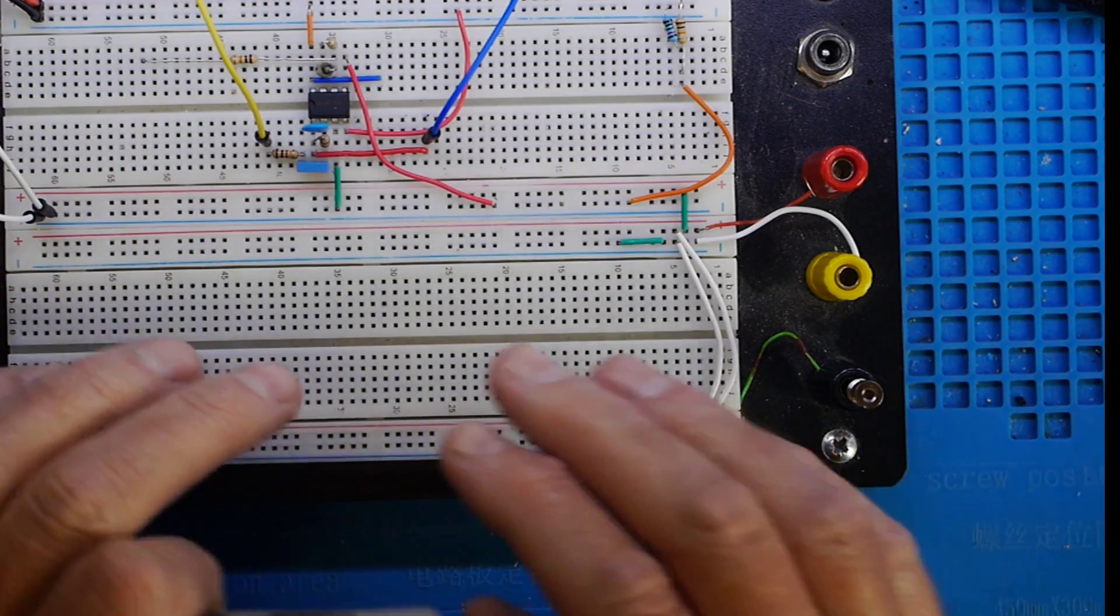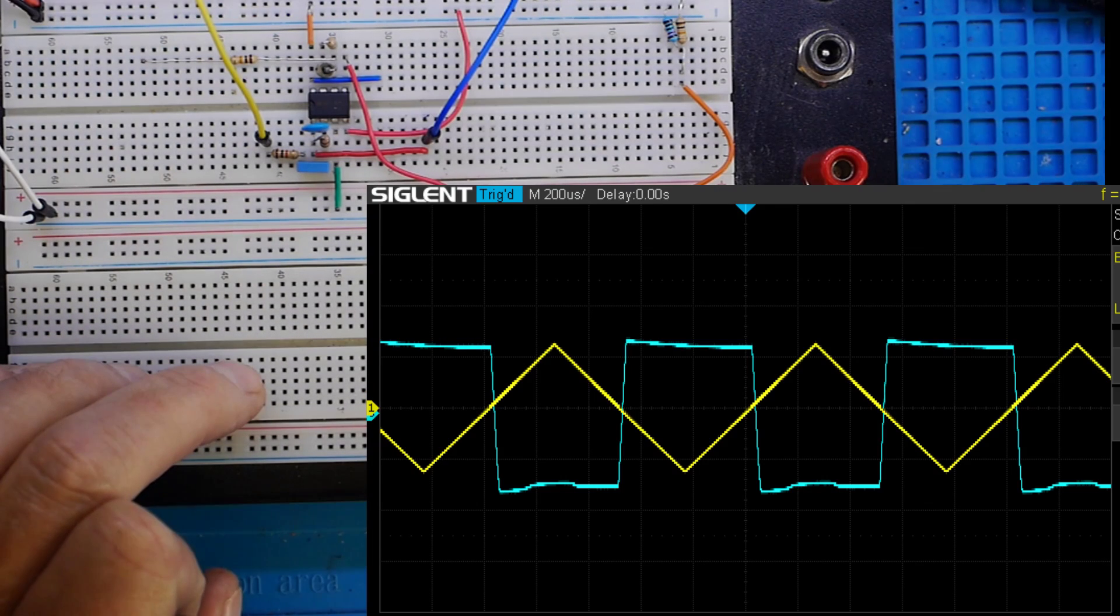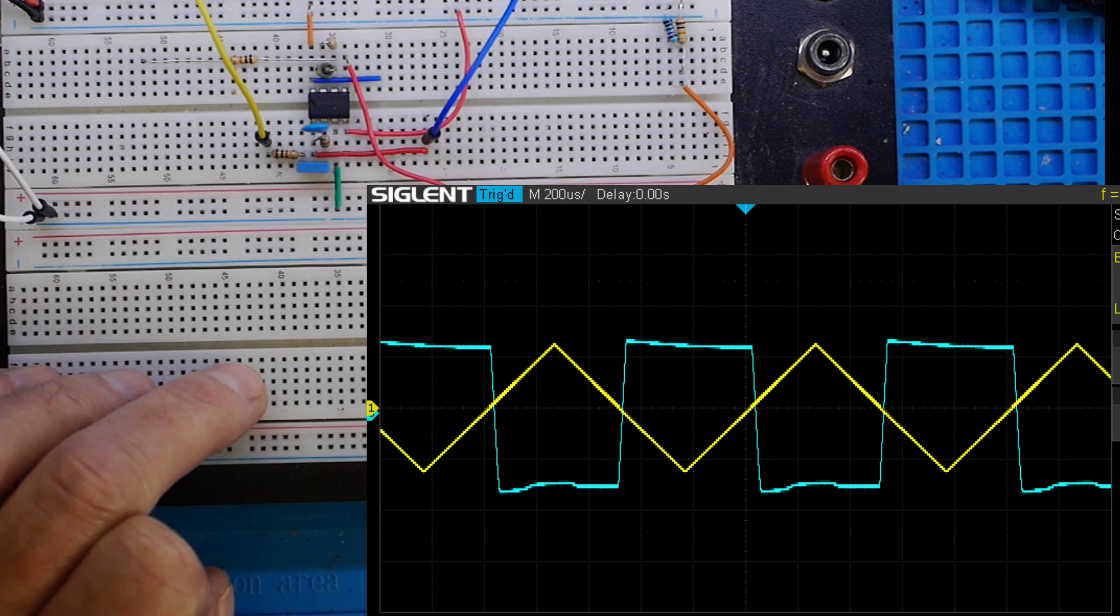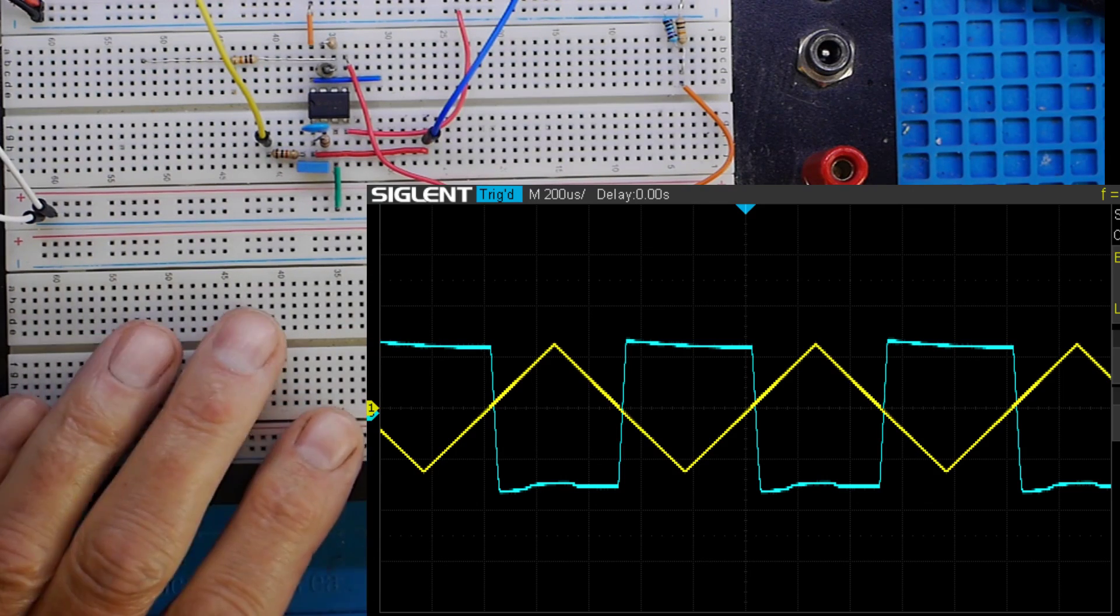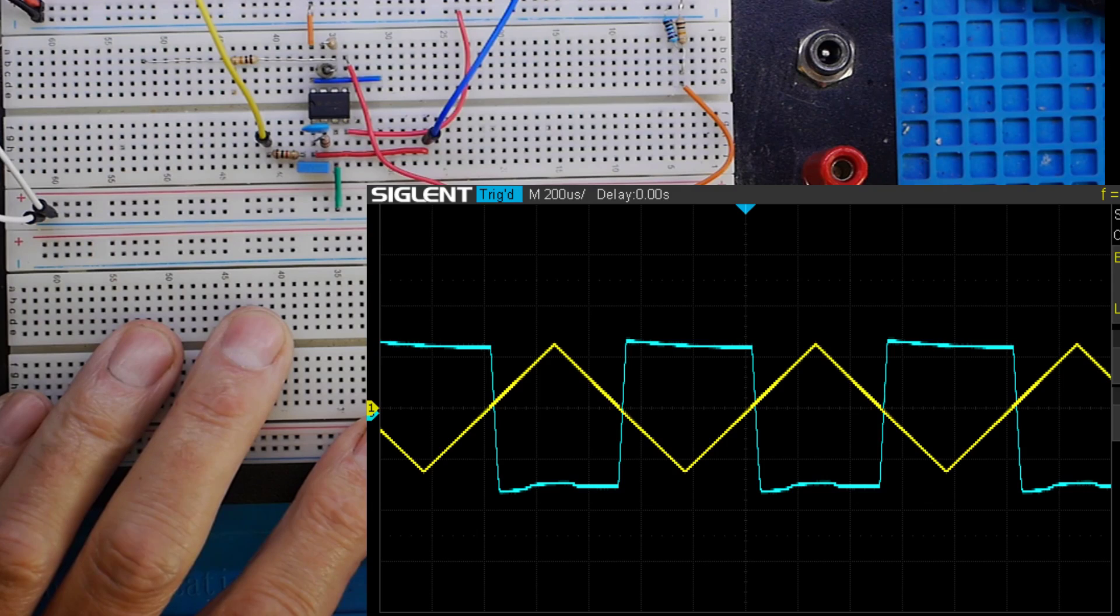Signal generator is on, producing a triangle wave. Let's have a look at the screen grab of that. As you can see, we've got the yellow triangle wave going in and we've got a pretty good approximation of a square wave coming out on the right hand side. That is the differentiator doing its job. Well done, the TL072.